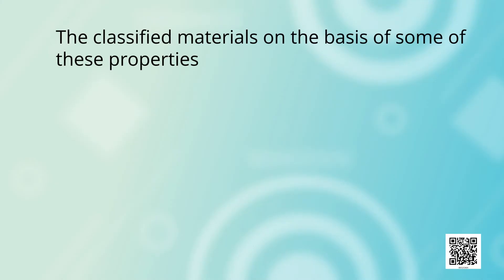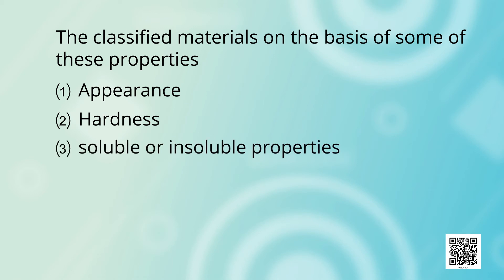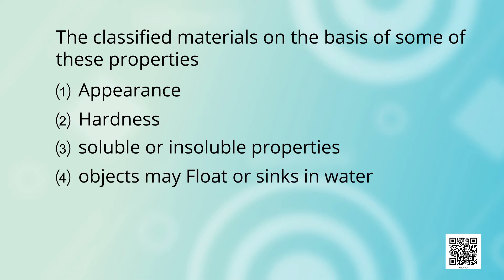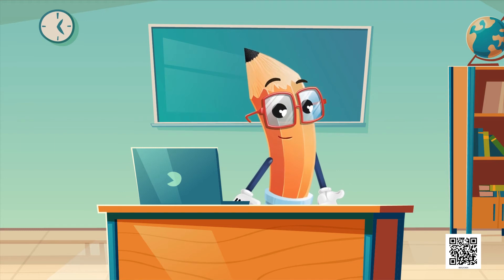We classify materials on the basis of some of these properties. The first property is appearance. The second is hardness. The third property is soluble or insoluble. The fourth property is whether objects float or sink in water. And the fifth property is transparency. We will now study all these properties of materials one by one.